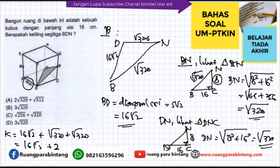Jadi 16 akar 2 + 2 kali akar 320. Karena 16 akar 2 = akar (256 × 2) = akar 512, maka jawabannya adalah 2 akar 320 + akar 512. Jawabannya adalah opsi A. Seperti itu untuk soal nomor 3. Kita lanjut soal nomor 4.